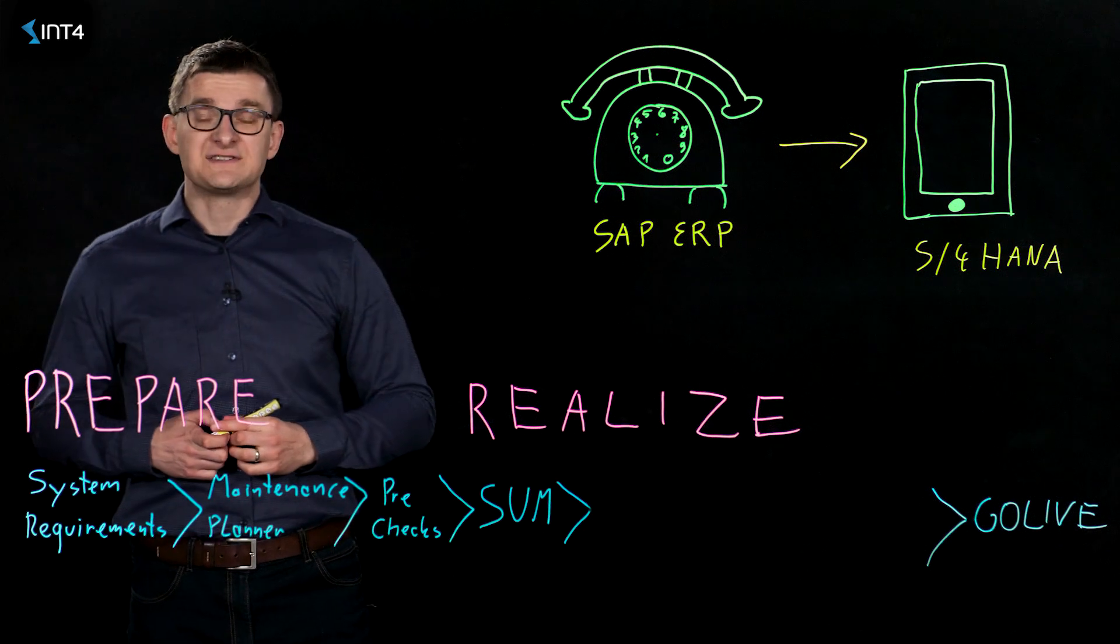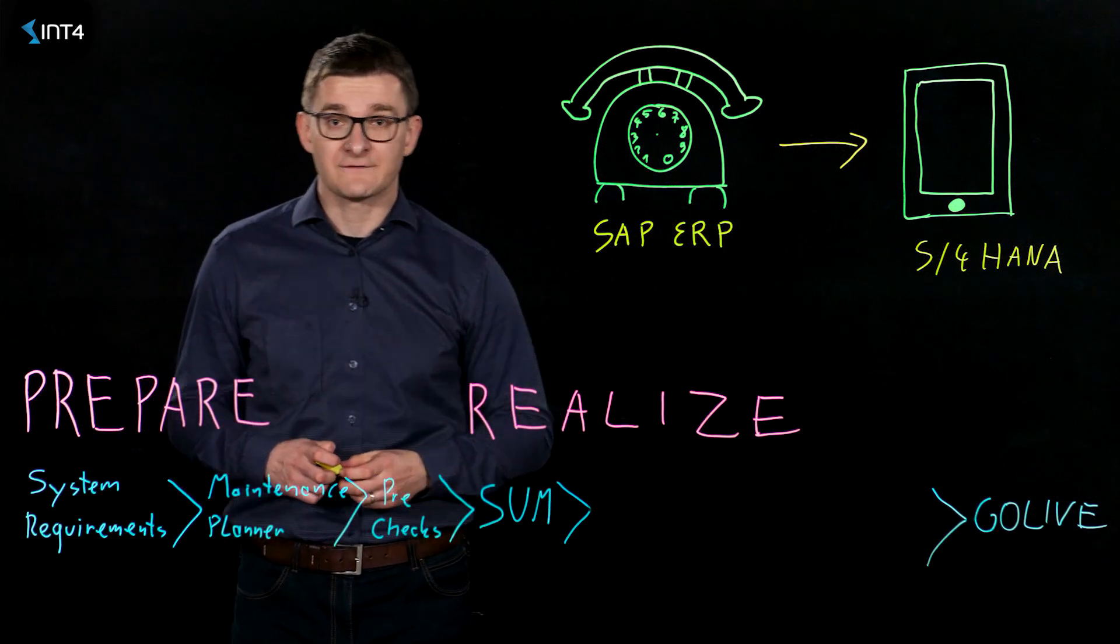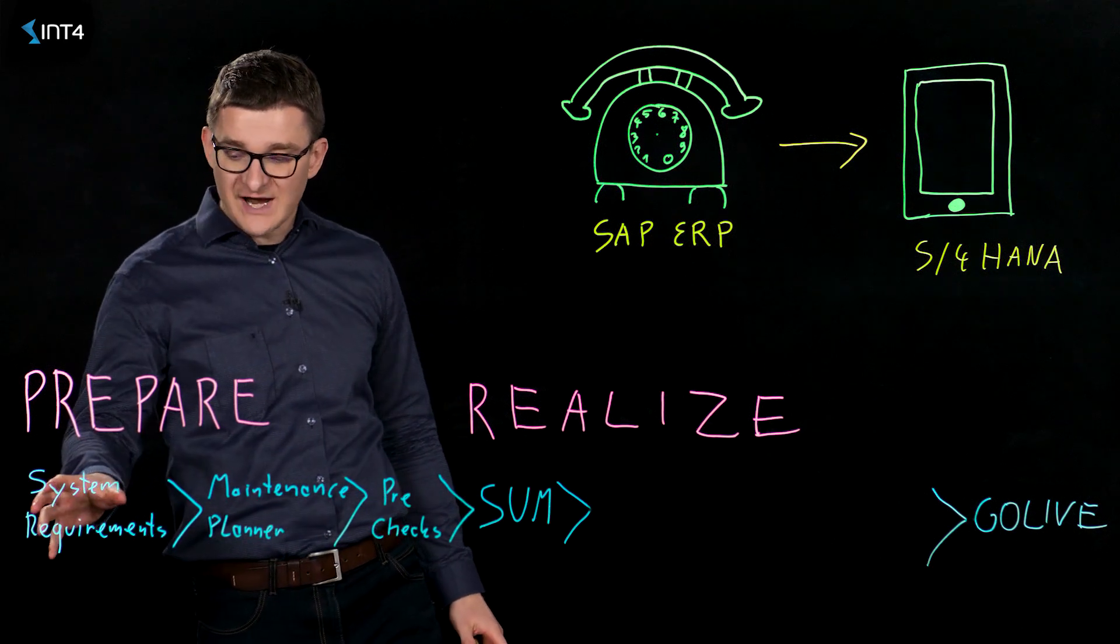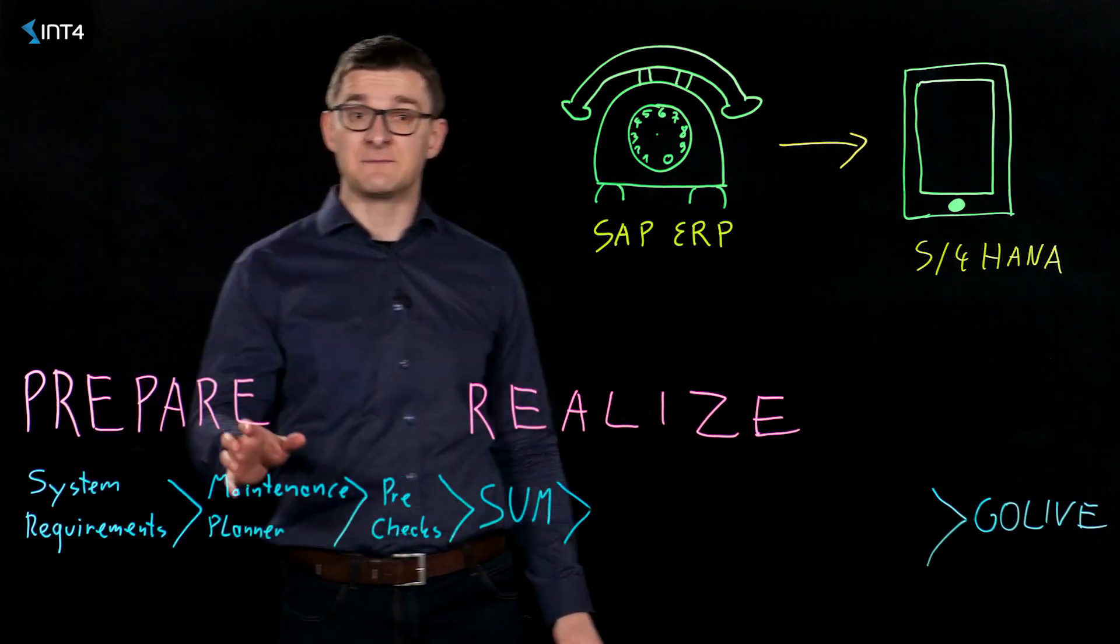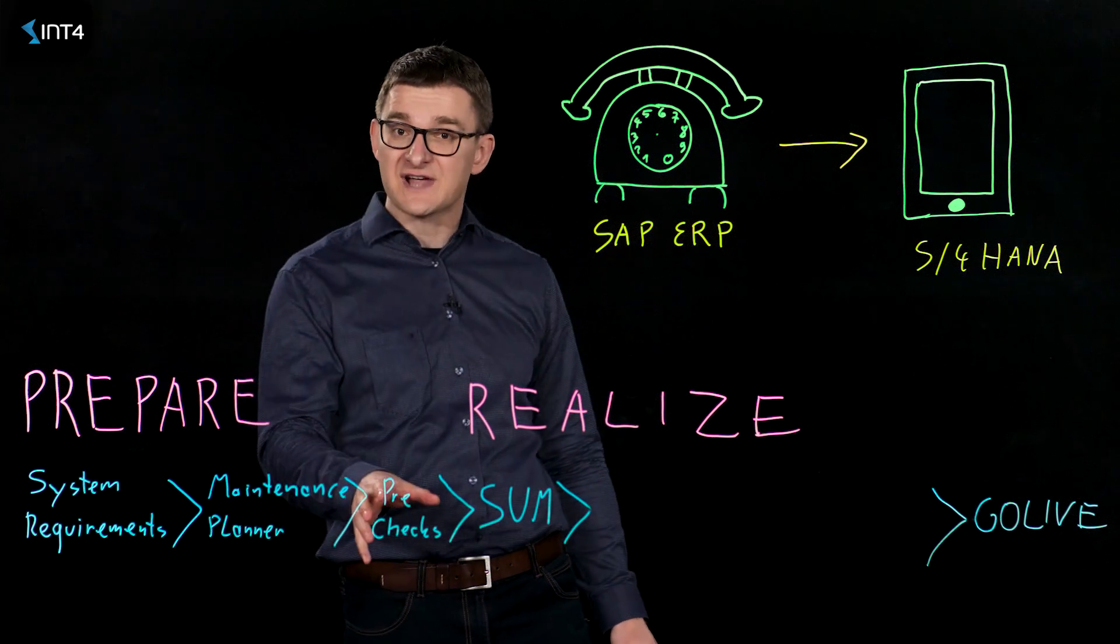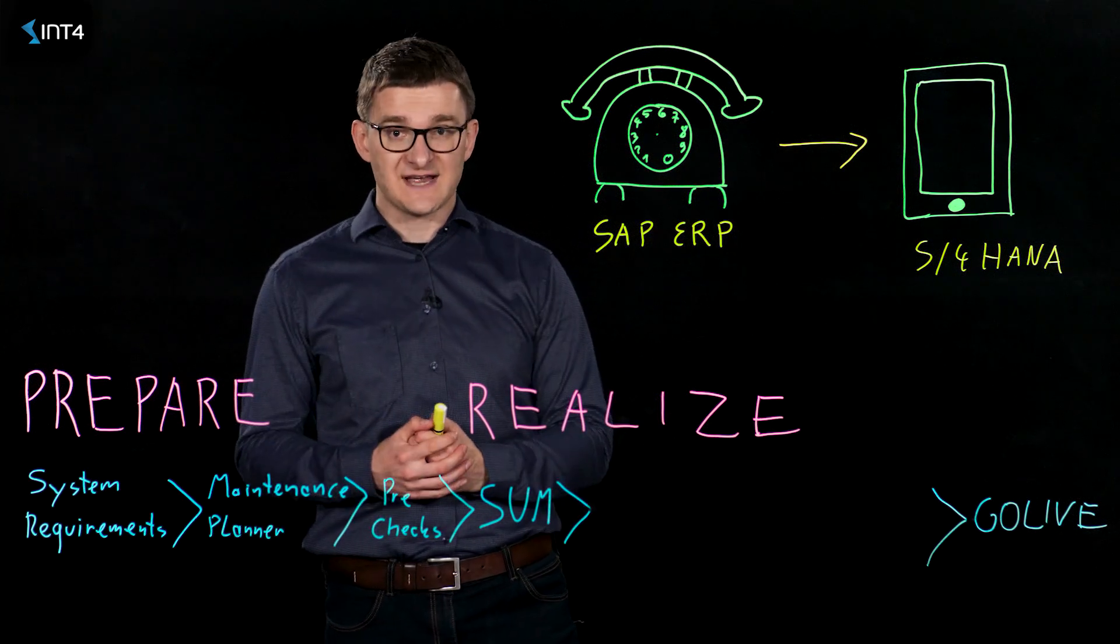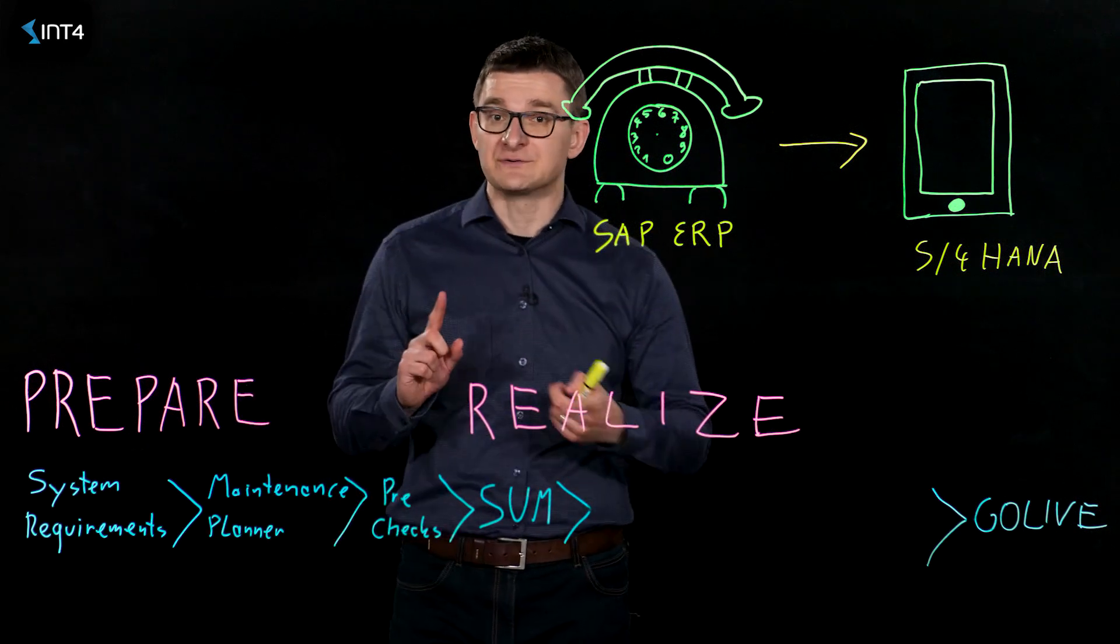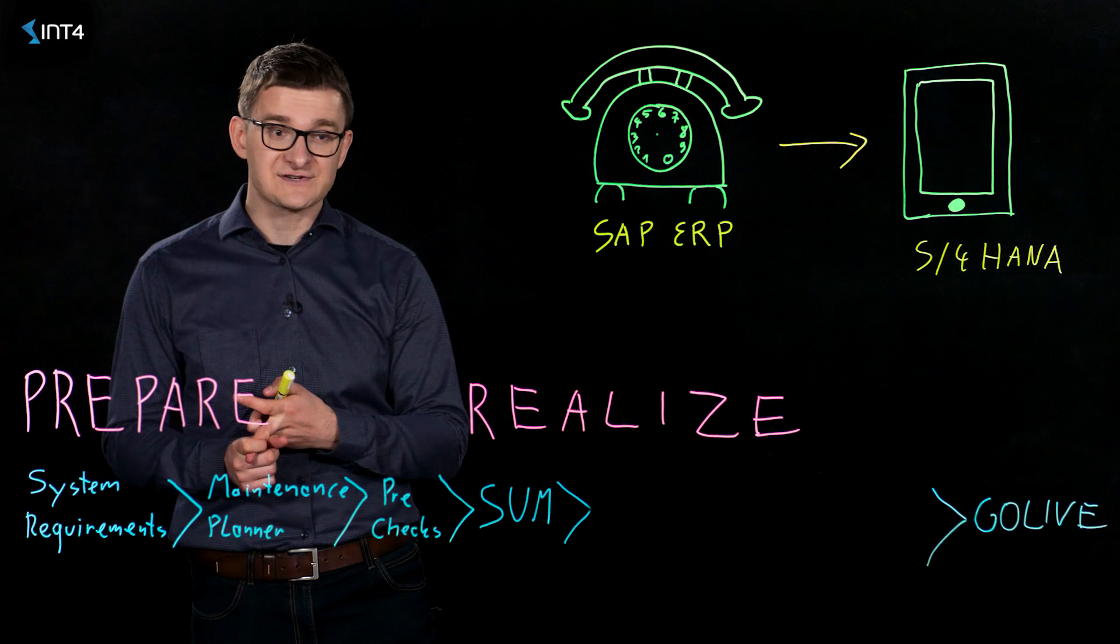What are the typical steps for an S4HANA conversion project? First, we need to start with the preparation phase, where we check the system requirements, run the maintenance planner, and do the pre-checks. Then comes the realization phase, where we run the software update manager, do the database conversion, and the data migration.